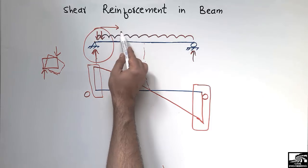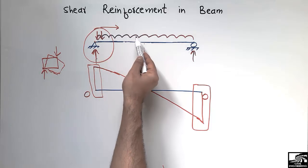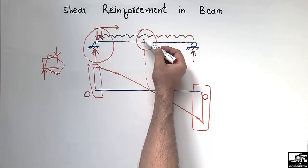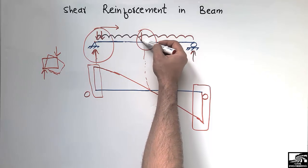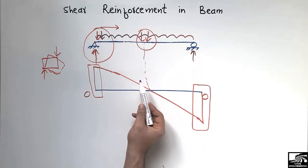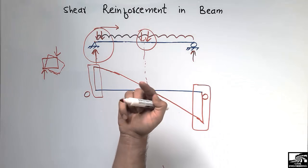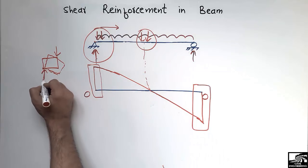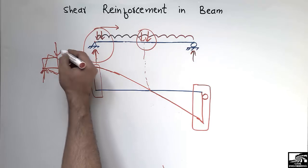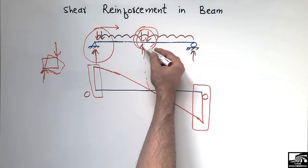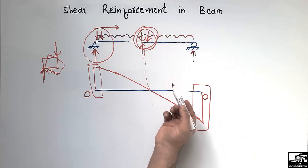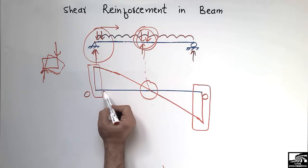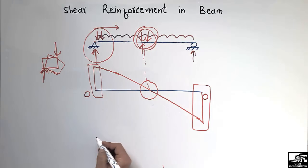As you move away from the support toward the midpoint, the shear stresses become lesser. At the midpoint there is no support reaction, so only the downward load acts. Since shear stress requires two forces acting in opposite directions at different points, and there is no upward force at the midpoint, there is no shear stress. This is why the shear force is zero at the midpoint but maximum at the supports.